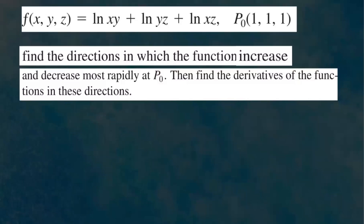In this video we're going to talk about how to find the direction in which a function increases most rapidly and decreases as well. That has to do with the gradient vector of the particular function. For the first part of this question, we want to know where the function increases most rapidly at point P0. Direction means we want a vector — more specifically, we want a gradient vector in this case.